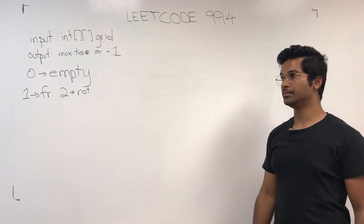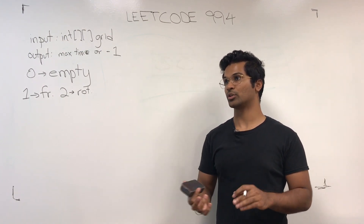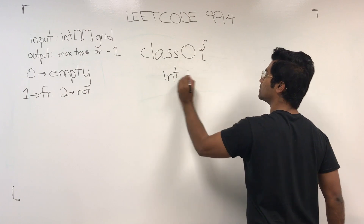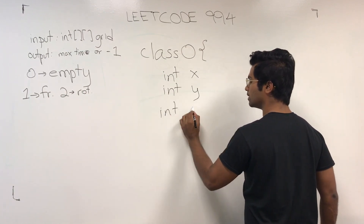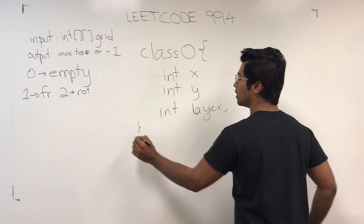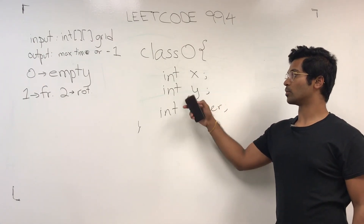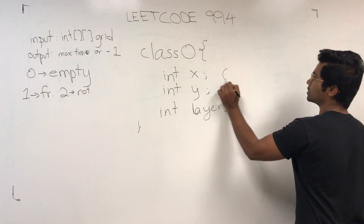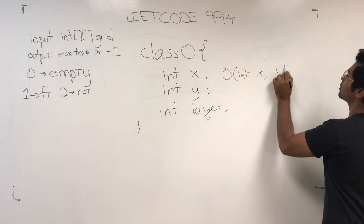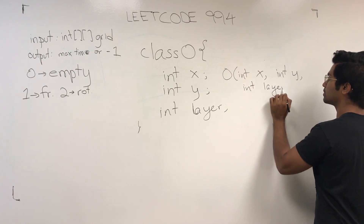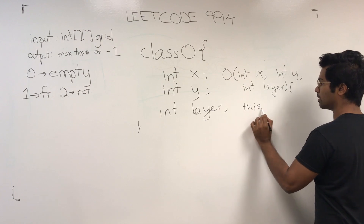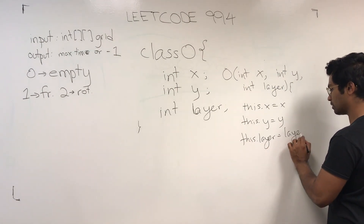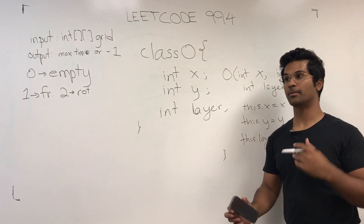The queue is going to take in all the oranges which are rotten in the beginning. I'm going to make a custom class with fields: int x, int y, and int layer. This is going to keep track of the x and y coordinate, and the layer is going to track the orange's distance from its closest rotten orange. Let me finish writing the constructor: this.x = x, this.y = y, this.layer = layer. This is the class we're going to use and feed into our queue.